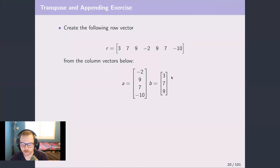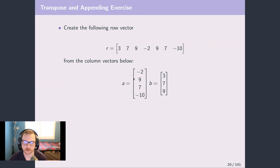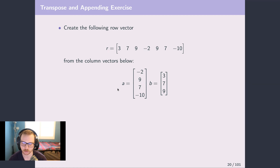The next exercise: I want you to make this row vector from two column vectors. First make column vectors A and B, and then with those column vectors write some code to generate the row vector R. You'll need to use the transpose operation. I'll give you a minute or two to work on this one.